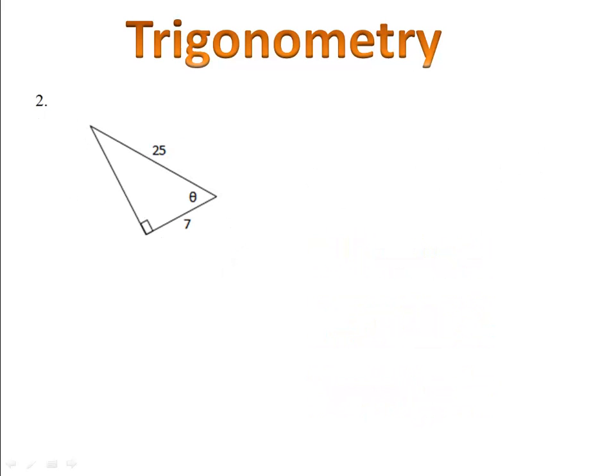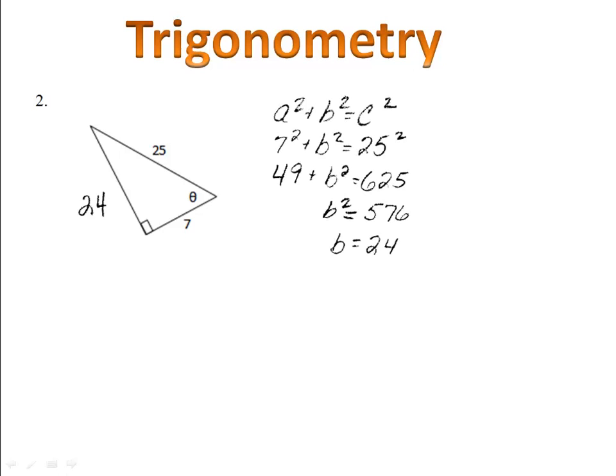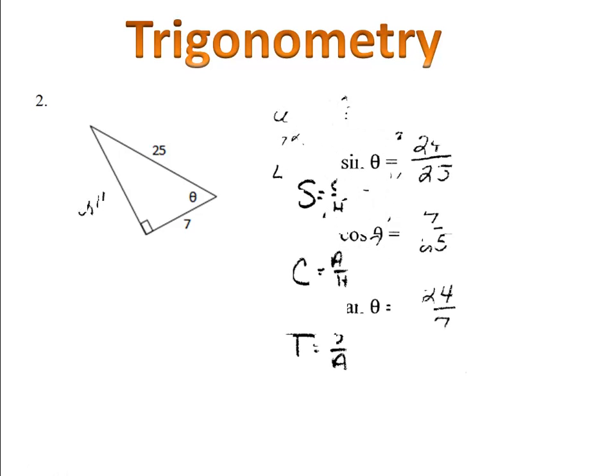Example two is for you to try. Notice we only have two of the sides, so we have to use the Pythagorean theorem to find the third. Please pause the video here, find the length of the third side, and then find the sine, cosine, and tangent of angle theta. We use the Pythagorean theorem to find that the length of the missing side is 24. Then we can use the triangle to find our ratios: sine, the ratio of the opposite to the hypotenuse, is 24 over 25. Cosine, the ratio of the adjacent side to the hypotenuse, is 7 over 25. Finally, the tangent, the ratio of the opposite to the adjacent, is 24 over 7.